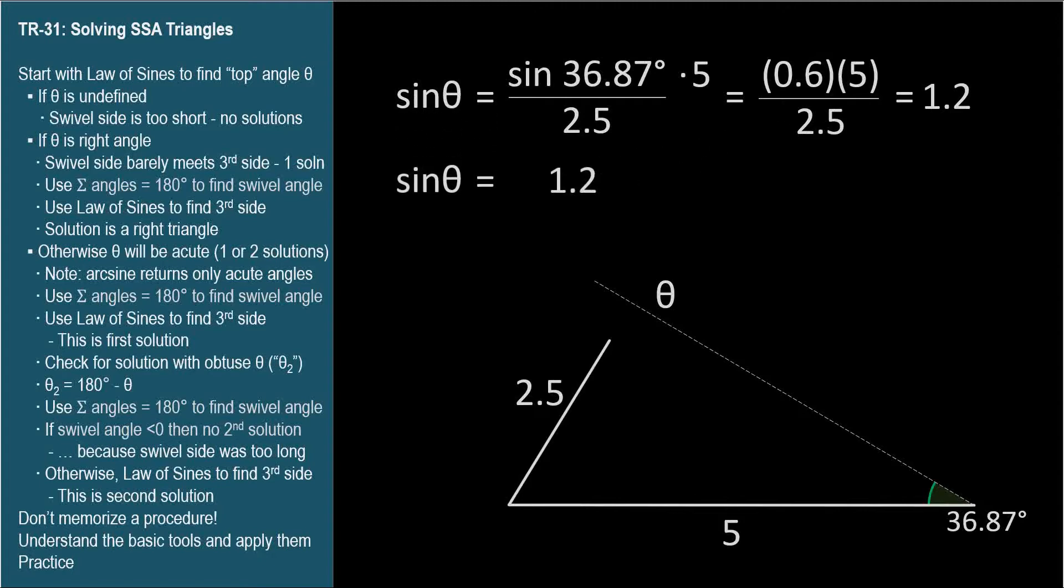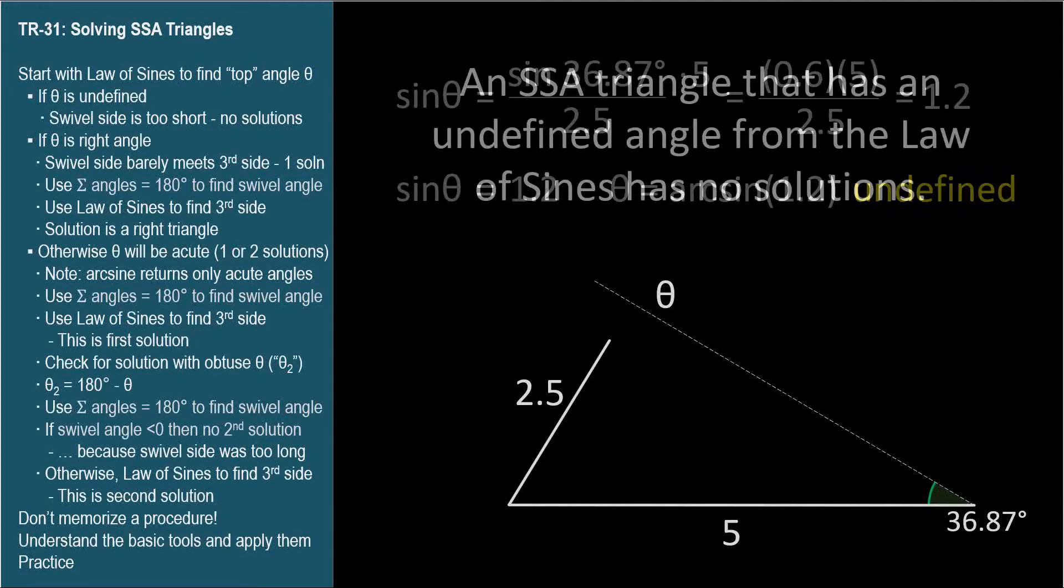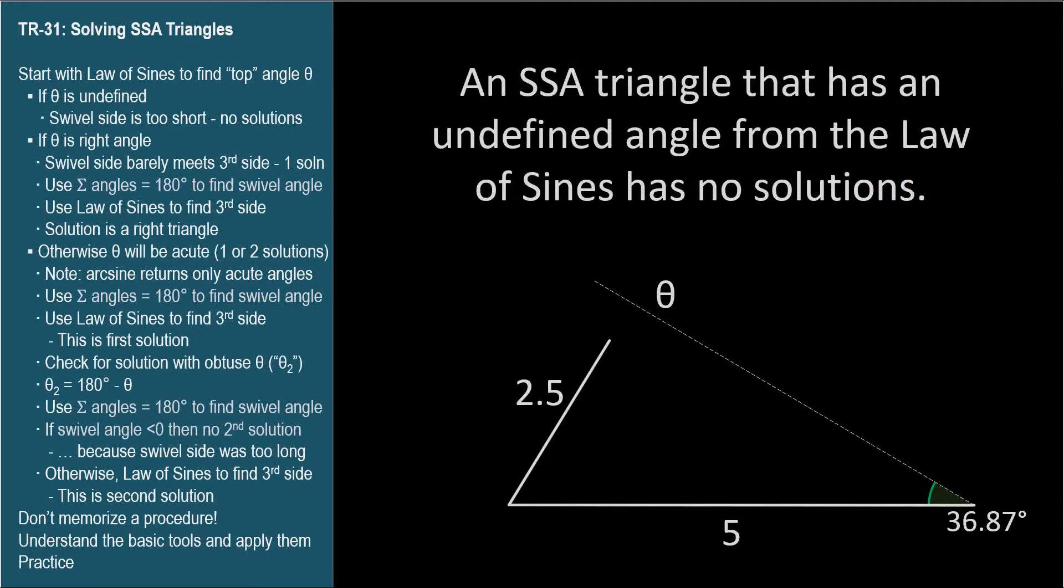Theta equals arcsine 1.2, which is undefined. There's no angle whose sine is 1.2. Sine is always between negative 1 and 1. So an SSA triangle has no solutions when we apply the law of sines to the given measures and get an undefined result for the first angle.